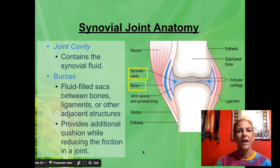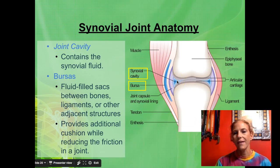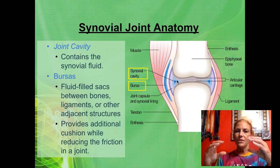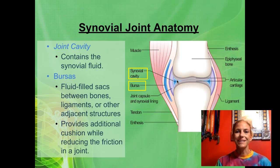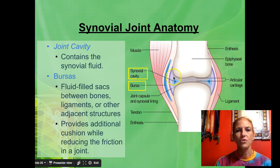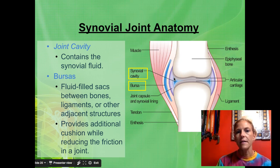So to recap: ligaments go bone to bone, whereas tendons go muscle to bone. Then we have the synovial cavity — the joint cavity — which is the space between the two bones. If things are going to move, they need space to move, so that's the purpose of the joint cavity. That's also where you'll find your synovial fluid.